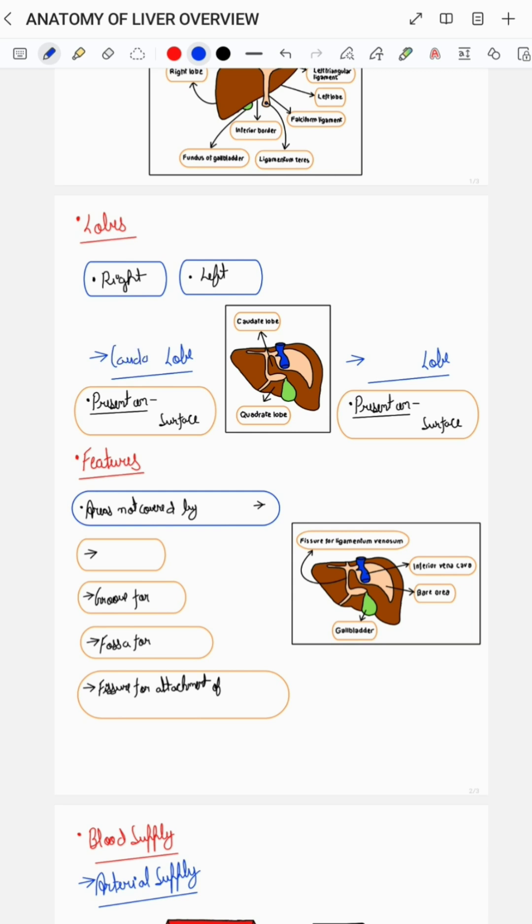As you can see in the diagram, the caudate lobe is present on the posterior surface and the quadrate lobe is present on the inferior surface.